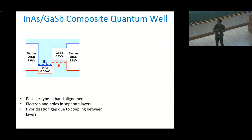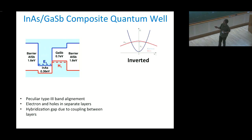Here one layer of electrons and one layer of holes can coexist together. If you see the uncoupled quantum well of these two materials, you can see this conduction band lies below the valence band of gallium antimonide. This is called the inverted band structure.